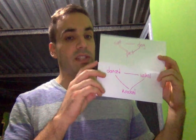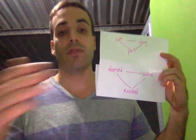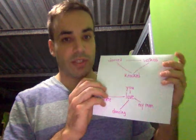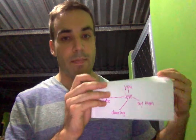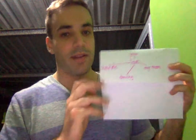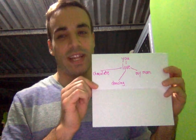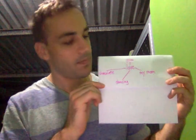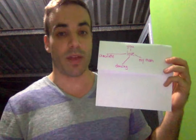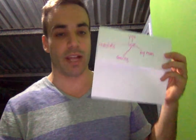For example, take the sentence that starts 'I love...' — I've given just some words that could continue that sentence. The distance of the other words from 'love' represents the strength of the connection.